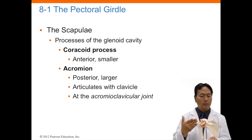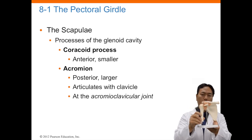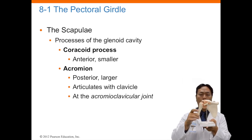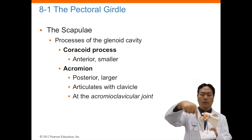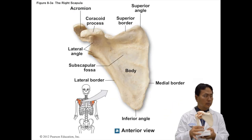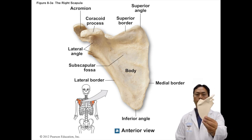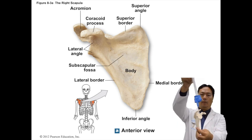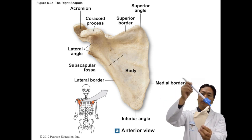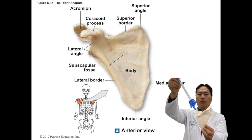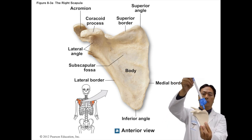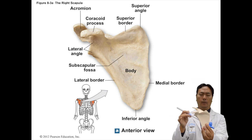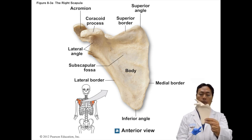The glenoid cavity is a connection joint where the humerus inserts into the shoulder. There you will find the coracoid process and the acromion, which are landmarks of the shoulder blade. Looking at a picture of the scapula, the acromion and coracoid process are extensions that help grip the humerus head. The superior border is the top border of the scapula, and it has a superior angle as a bony landmark. The body is the largest section of the entire scapula. The lateral border is on the outside, the medial border is toward your heart, and the inferior angle is the lowest point of the scapula.